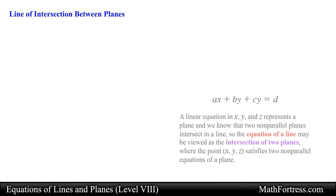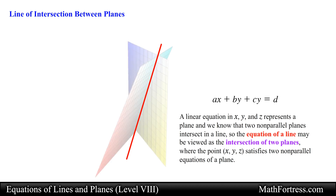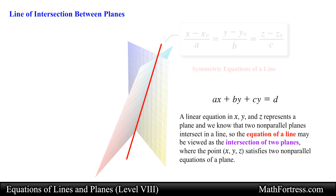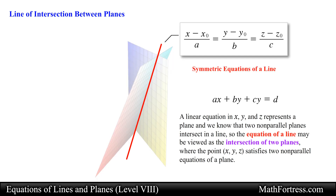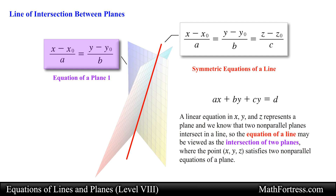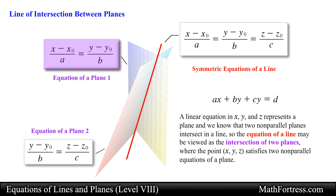Also notice that the line of intersection of two planes is parallel to the cross product of the intersecting planes' normal vectors. This means we can find the direction number of the line by taking the cross product of the planes' normal vectors. A linear equation in x, y, and z represents a plane, and we know that two non-parallel planes intersect in a line. So the equation of a line may be viewed as the intersection of two planes where the point x, y, z satisfies two non-parallel equations of a plane. In general, when we write the equation of a line in symmetric form we regard the line as the line of intersection of two planes. One plane has the equation x minus x0 over a equals y minus y0 over b, and the second plane has the equation y minus y0 over b equals z minus z0 over c.